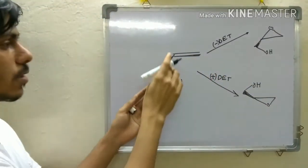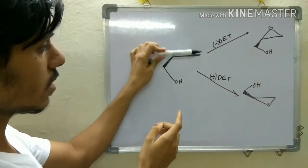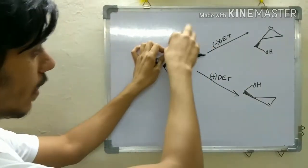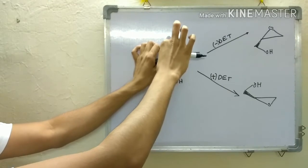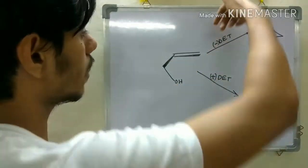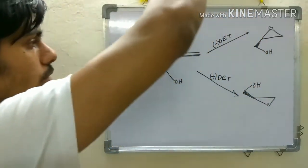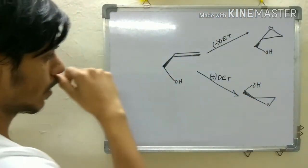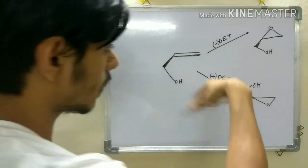So, this position is fixed. You have to watch it like this: the alkene is in the plane of the board, and your CH2OH is coming towards you like this.